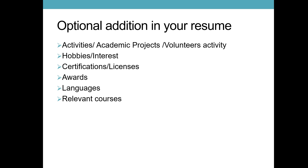The last section is optional additions. You can write activities, academic projects, or volunteering projects. For hobbies and interests, only write things you are genuinely interested in so you don't get blank when asked questions. Also include certifications and licenses, awards, languages you know, and relevant courses from platforms like Udemy or other additional certifications.